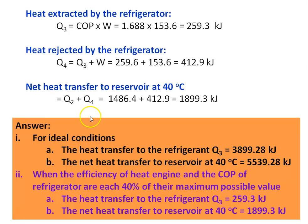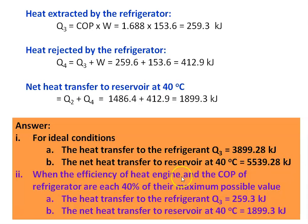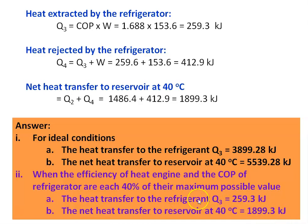Answer to the problem: Number 1, for ideal conditions, heat transfer to the refrigerant equals 3899.28 kilojoules, and net heat transfer to the reservoir at 40°C equals 5539.28 kilojoules. When the efficiency of the heat engine and COP of the refrigerator are each 40% of their maximum possible value, heat transfer to the refrigerant Q3 equals 259.3 kilojoules, and net heat transfer to the reservoir at 40°C equals 1899.3 kilojoules.